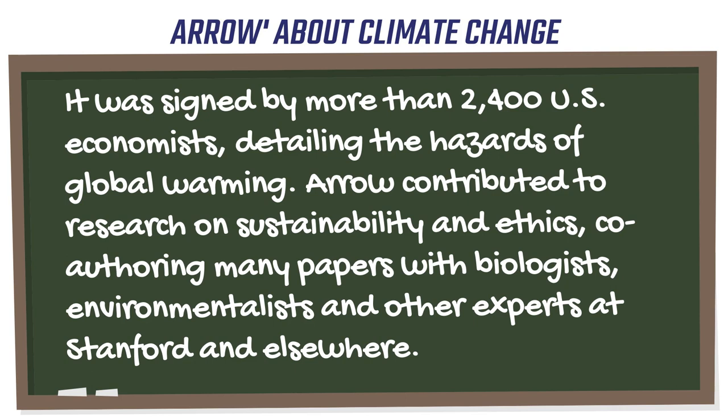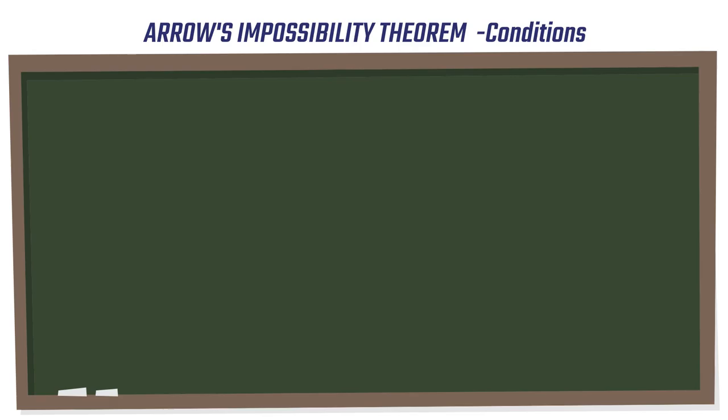Independence of irrelevant alternatives. If a choice is removed, then the others' order should not change. If candidate A ranks ahead of candidate B, candidate A should still be ahead of candidate B even if a third candidate, candidate C, is removed from participation.